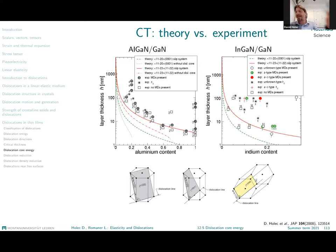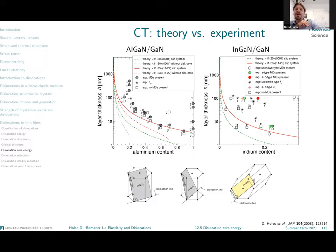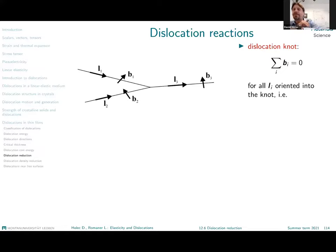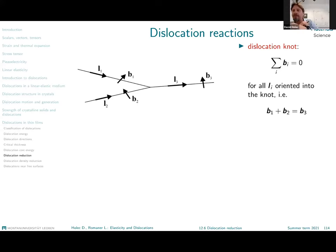For the engineering purposes, what we want to predict is the critical thickness — what is the maximum thickness of the film we can guarantee that no dislocations will ever be present. I have here two quick last topics. The first one is what can happen with the dislocation density — we want to get rid of the dislocations. We said that the dislocations can end only at the free surface, potentially at defects such as grain boundaries, or if two dislocations with favorable geometrical configuration meet and react.